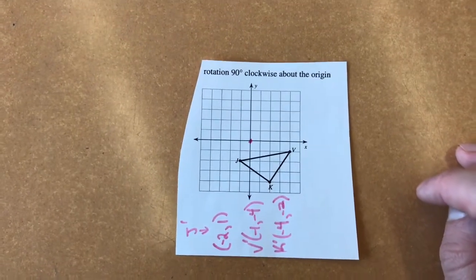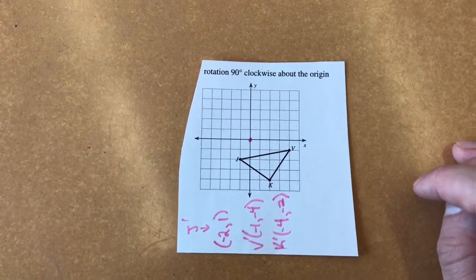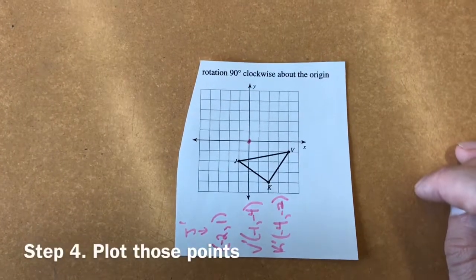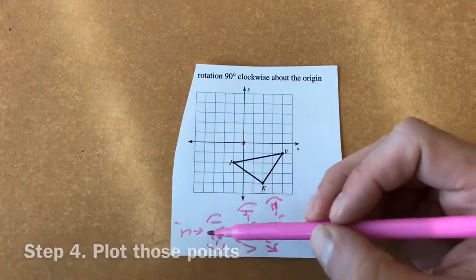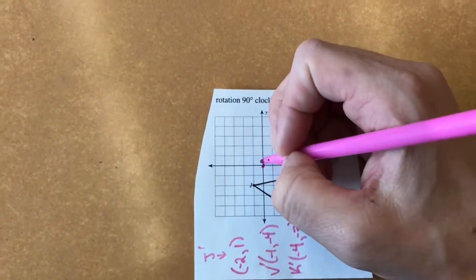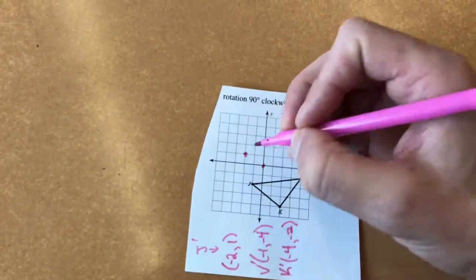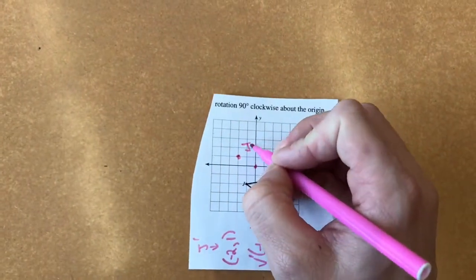Step four now is to finish the problem. Step four is you take those points and you write them on the graph. So my three points were J prime, which was negative two, one. So negative two, one is going to be right there. J prime.